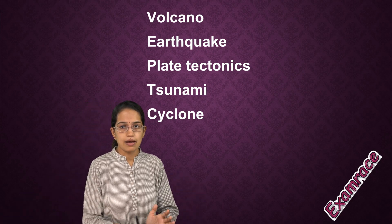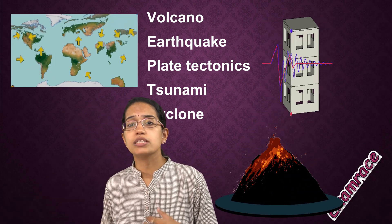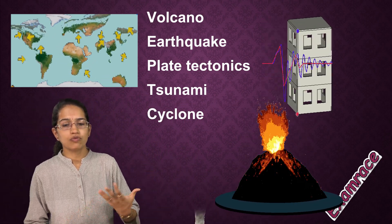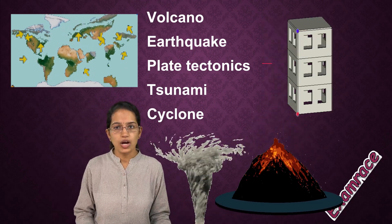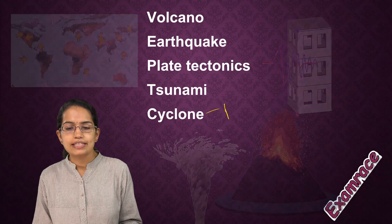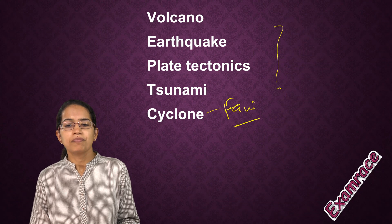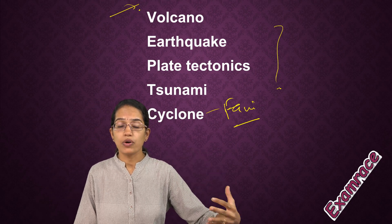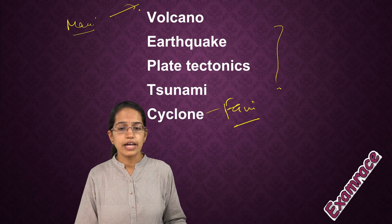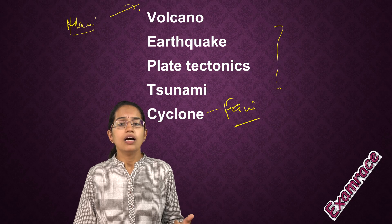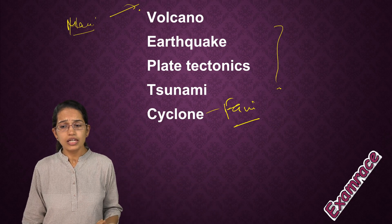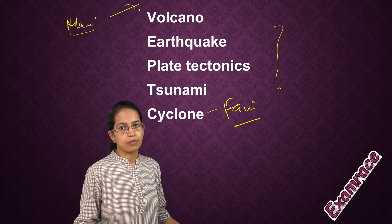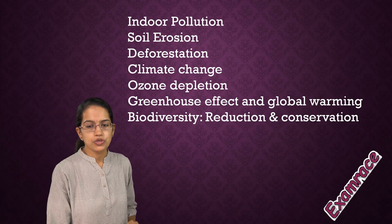Then we talk about natural calamities: volcanoes, earthquakes, plate tectonics, tsunamis, and the impact of the Andaman tsunami in 2004. We also discuss cyclones — recently cyclone Fani hit the coast of Odisha. For volcanoes, Mount Agung erupted recently, and in the Hawaii islands the Kilauea volcano has been continuously erupting for the last few months. These kinds of recent developments can be part of your question paper, and we have separate videos on all these topics.